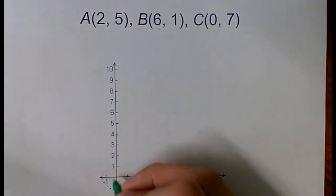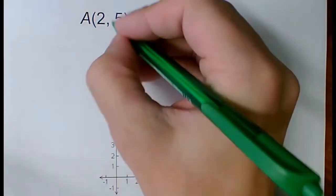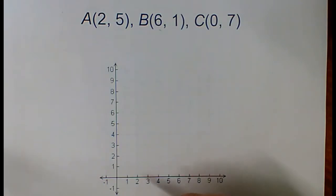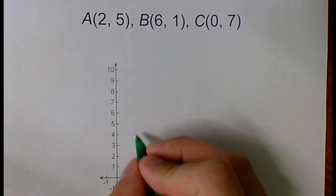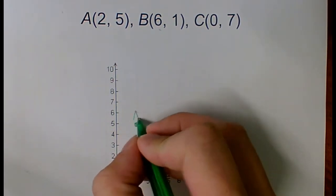So A, which is two, five, is going to be right two. And then the second number tells you where to go up if it's a positive number. So A is two, five, which means I go right two, up one, two, three, four, five, put a dot, call it A.